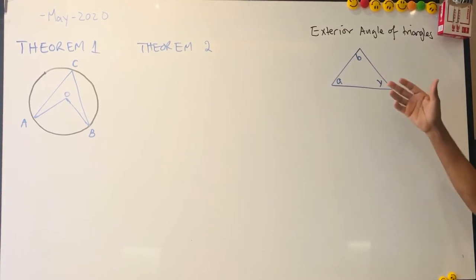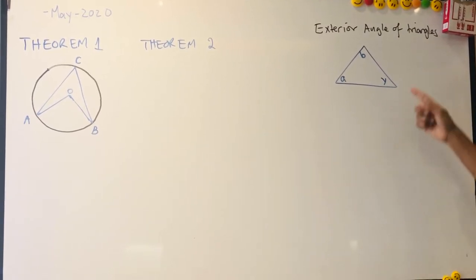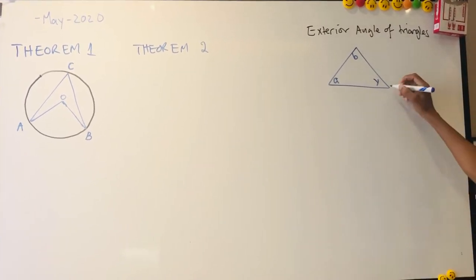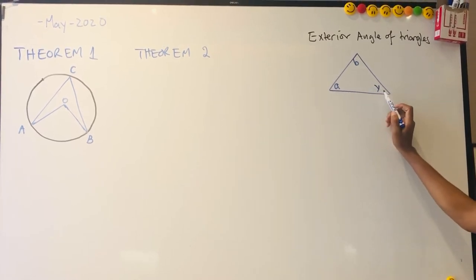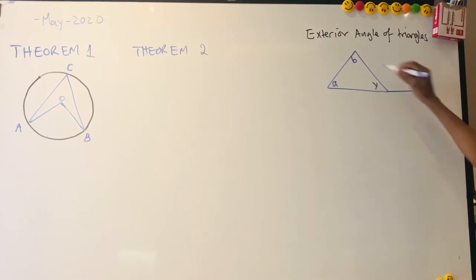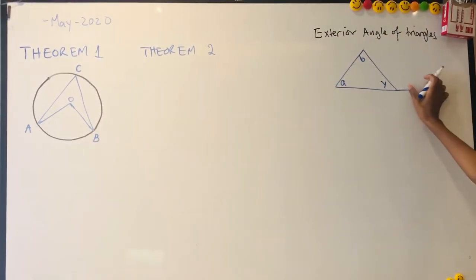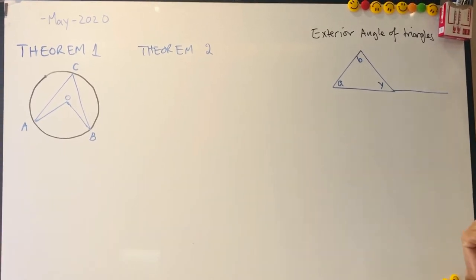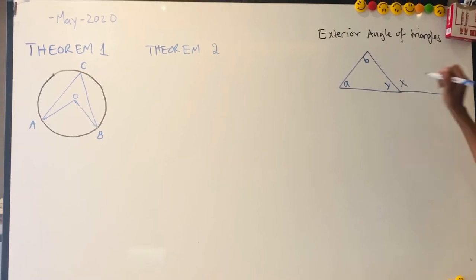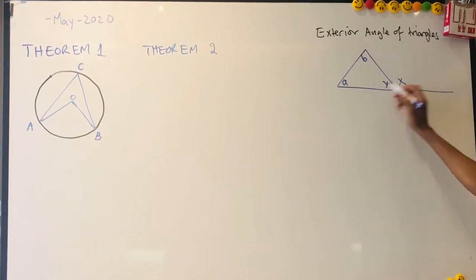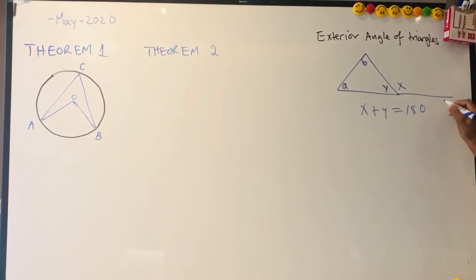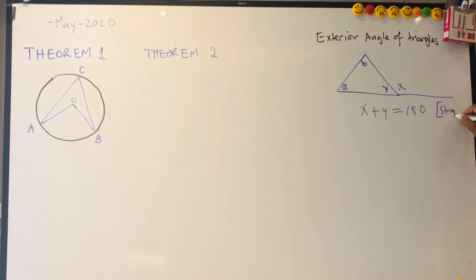The exterior angle of a triangle. Say we have a triangle — we've done this last year or probably in Grade 7. We know that a plus b plus y is equal to 180. Now let us extend the side — hence I'm talking about the exterior angle of a triangle. Let's say that is your x. You know that x plus y is equal to 180, and the reason for that is: straight line.